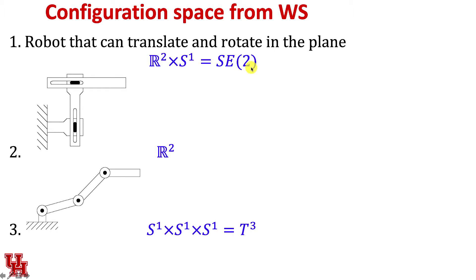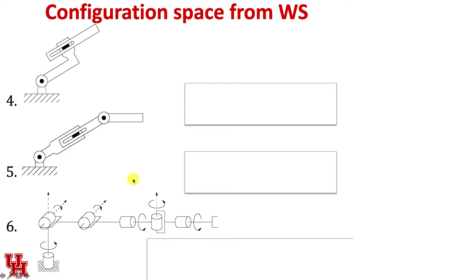This next robot is a prismatic-prismatic robot, so its configuration space is R² — an XY location for the end effector. Then this planar manipulator with three rotational joints: that's S¹ cross S¹ cross S¹, which is a three-dimensional torus.